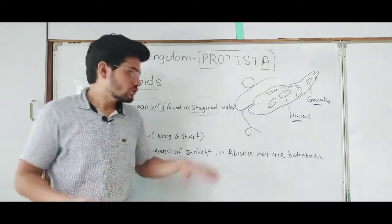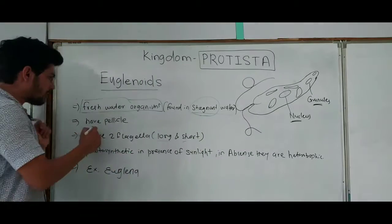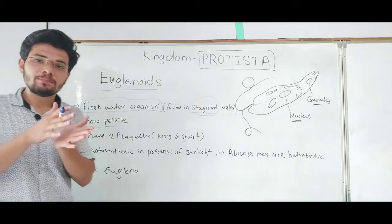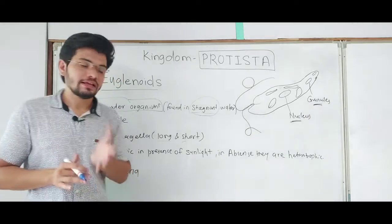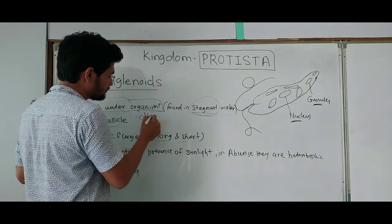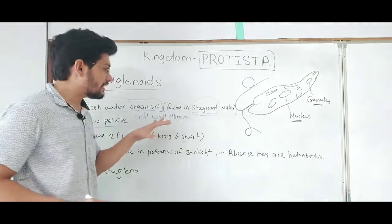So in steady water these euglenoids are found. They have pellicle. What does it mean by pellicle? Pellicles mean the protein-rich layer instead of cell wall. So cell wall will be absent in them and instead of this cell wall, this protein-rich layer is present.